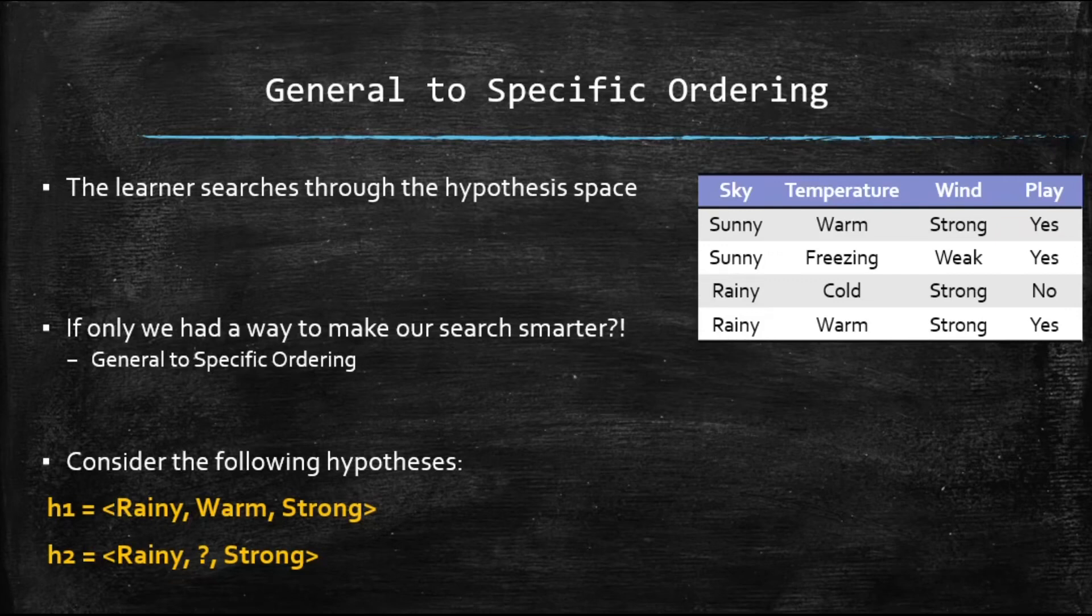Basically the learner searches through our hypothesis space to find that best hypothesis that would fit our training data. If only there was a way for our learner to have a smart method to search through the hypothesis in the space, that would have been great. As in only search the ones that you need to search, unless you really have to. Don't go towards certain directions in your search space, basically make it much smarter.